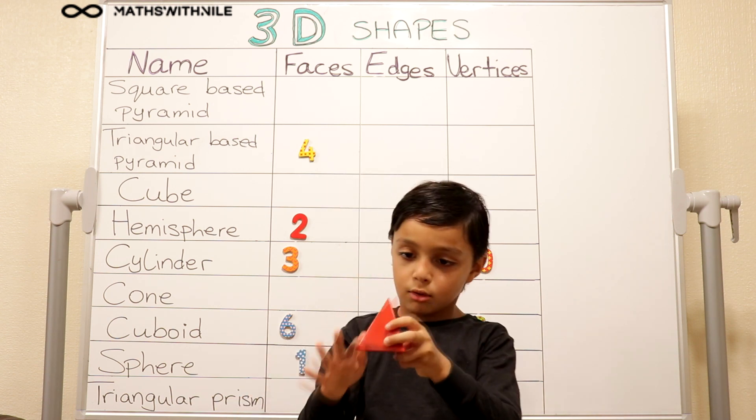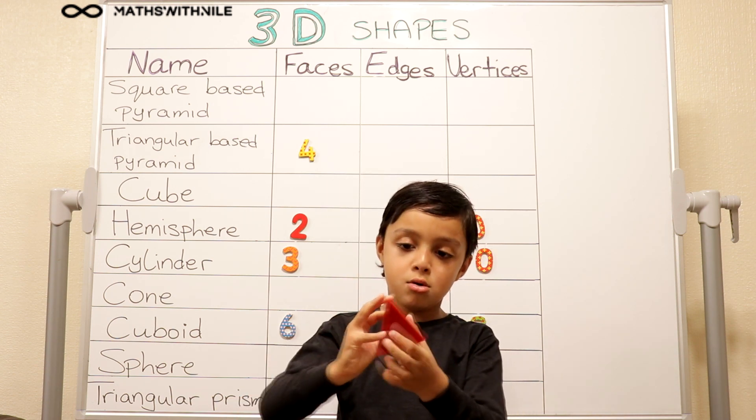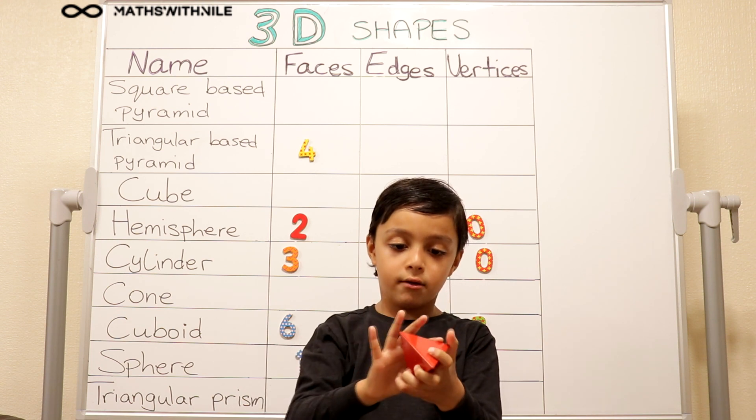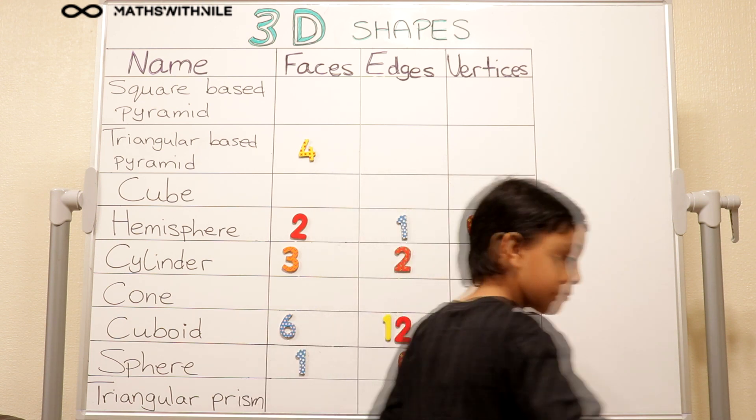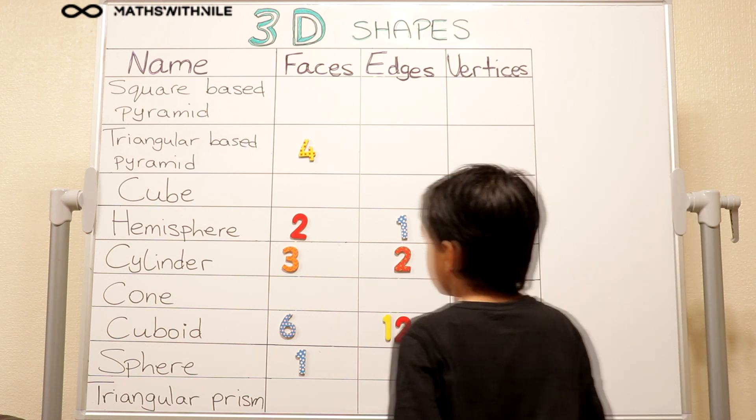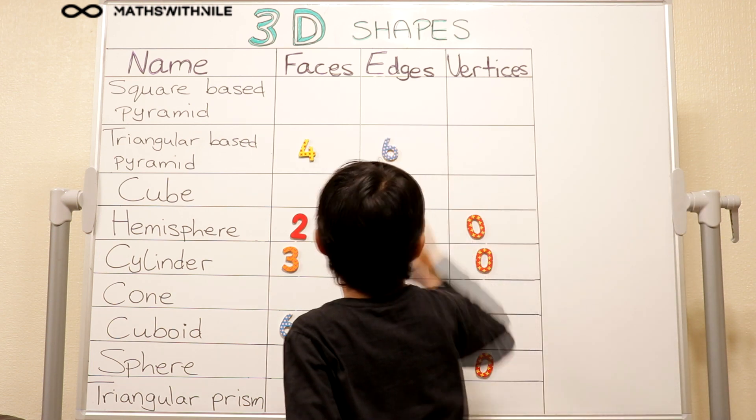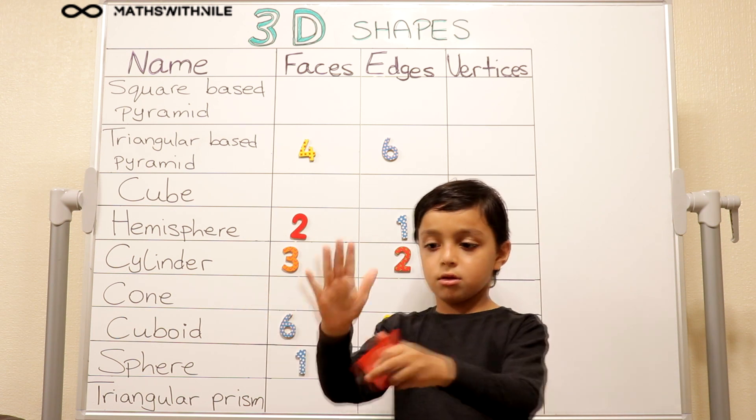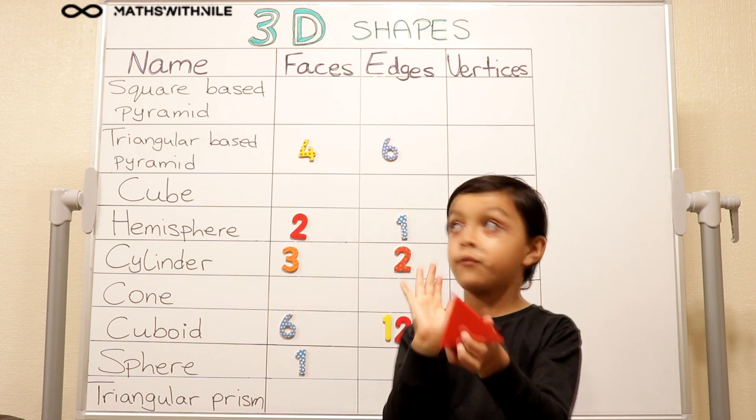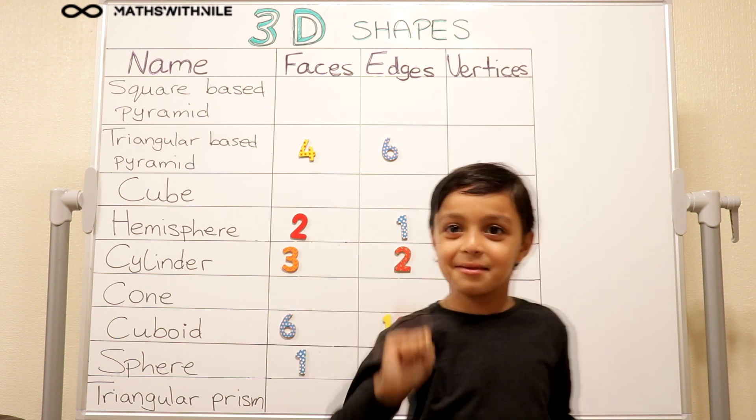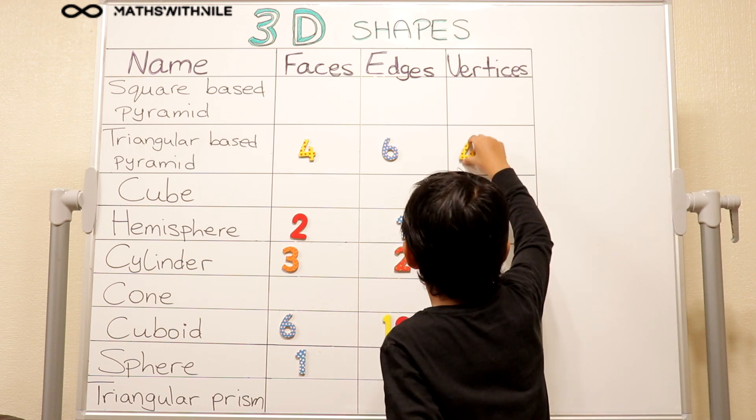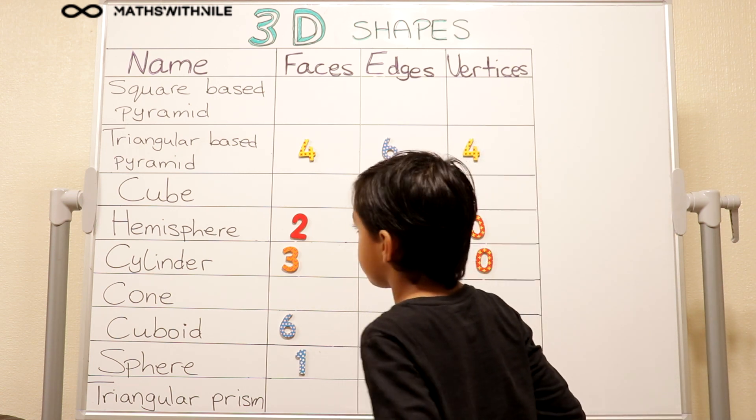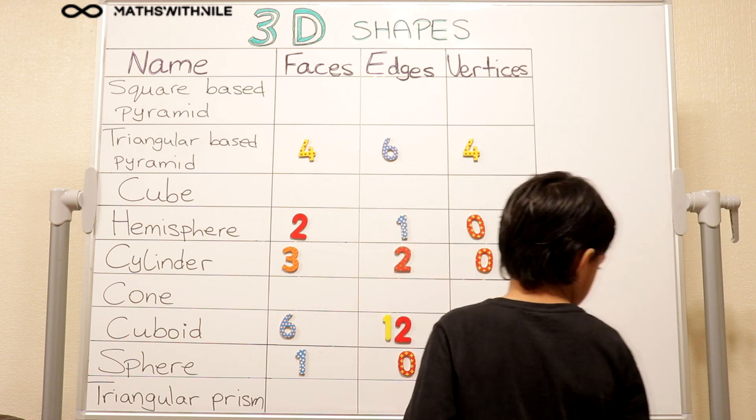How many edges? One, two, three, four, five, six. Very good. Four vertices. Let's put that down and let's grab another shape.